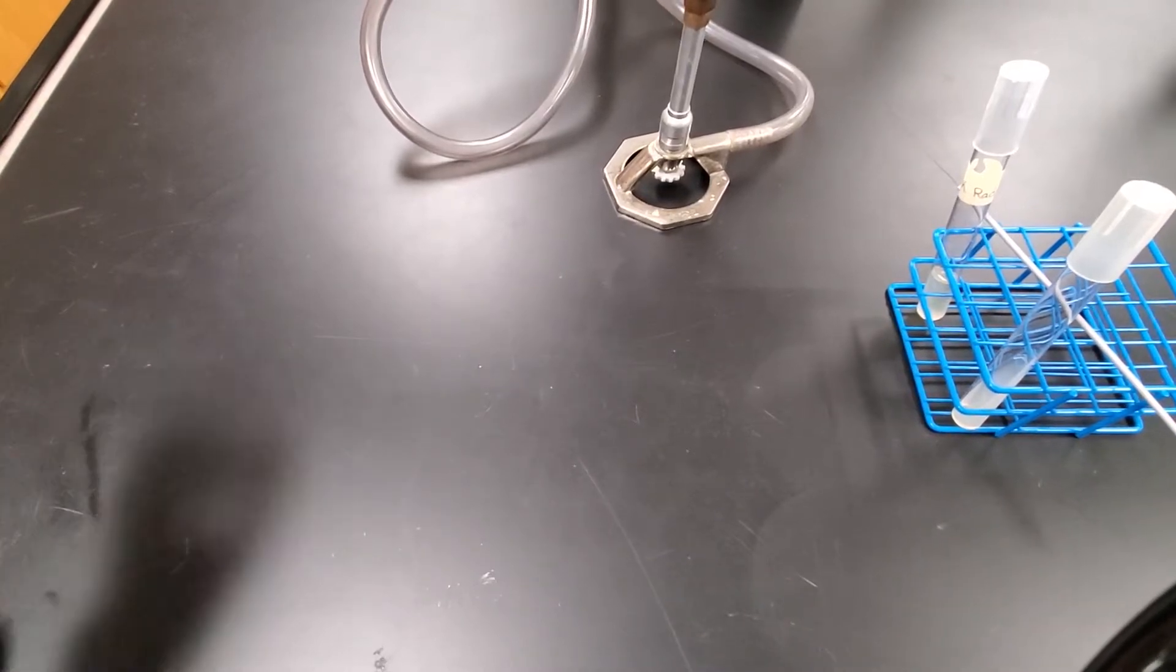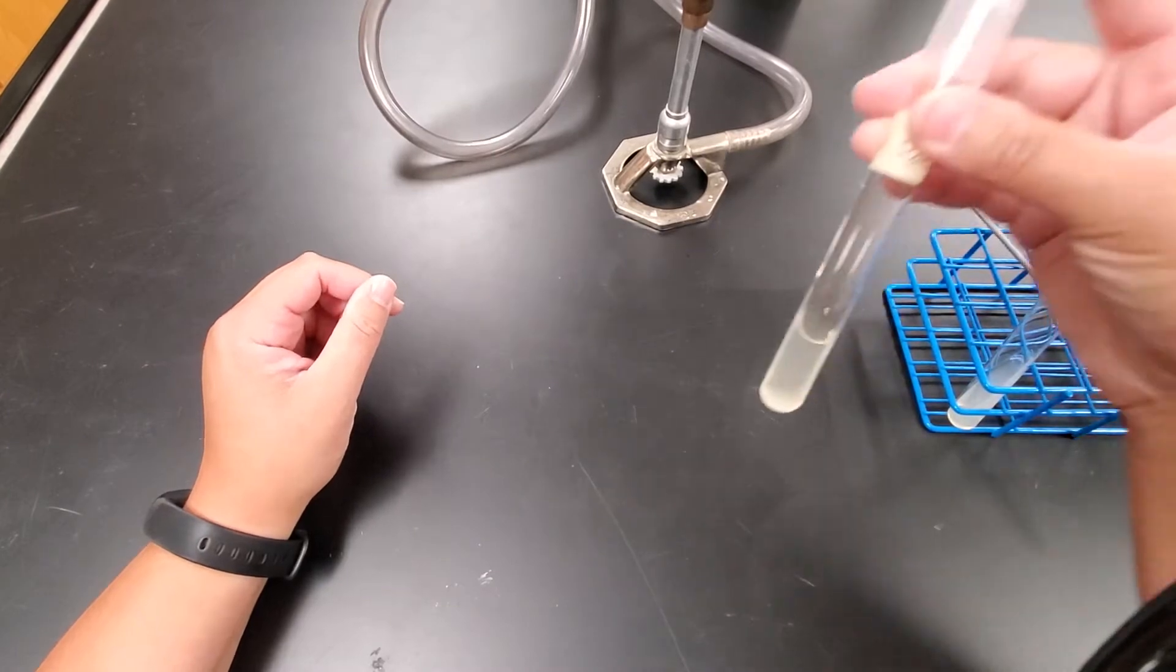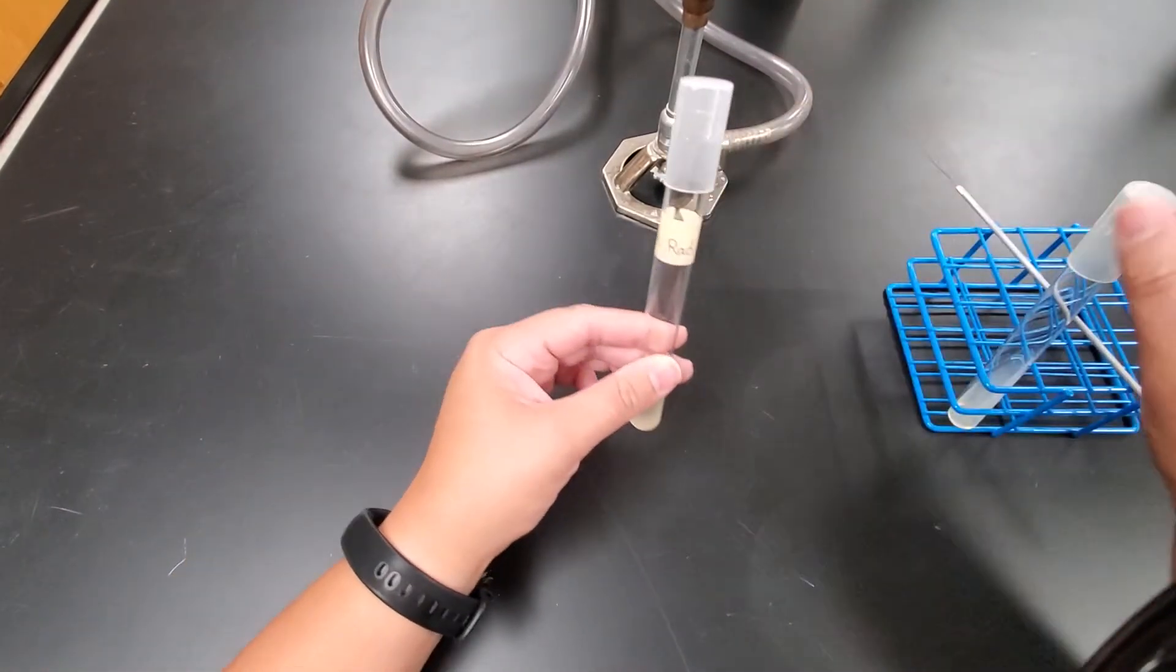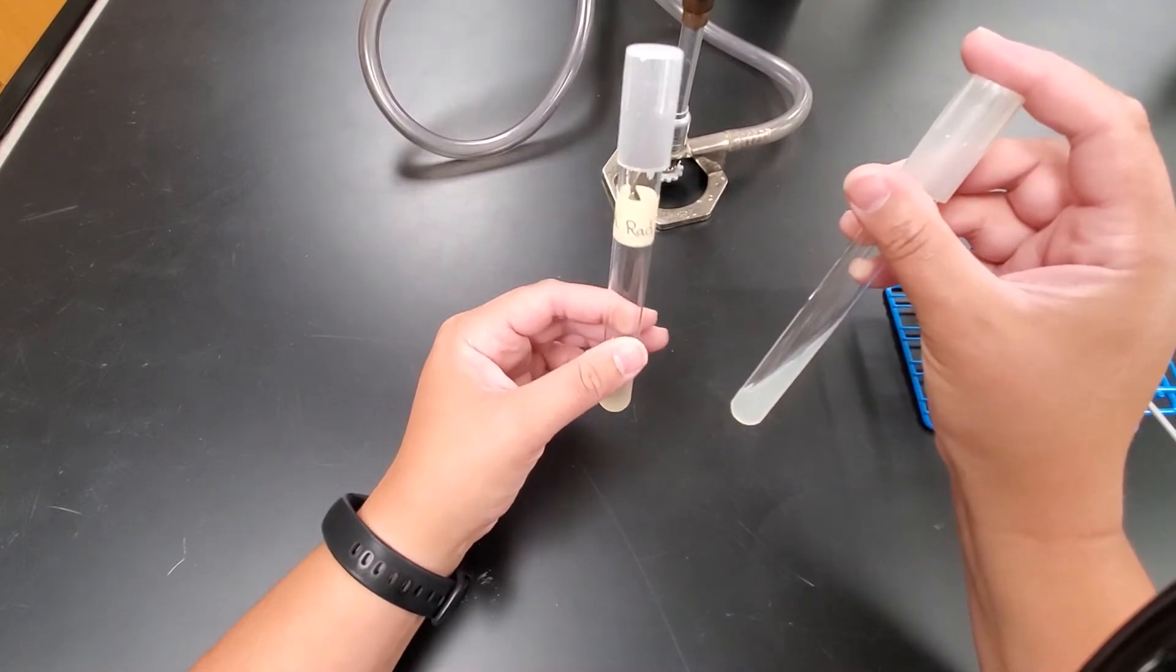All right, so what we're going to be doing today is a culture transfer. We have our broth tube from our yogurt, and we're going to transfer a sample to an agar slant. You can see it's slanted in a slanted position.